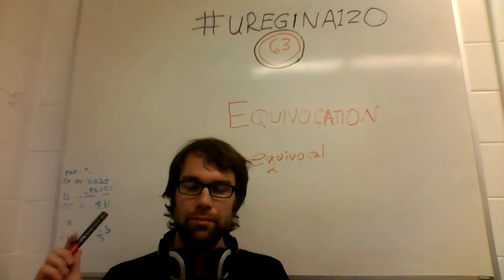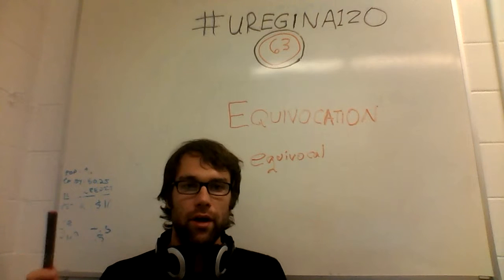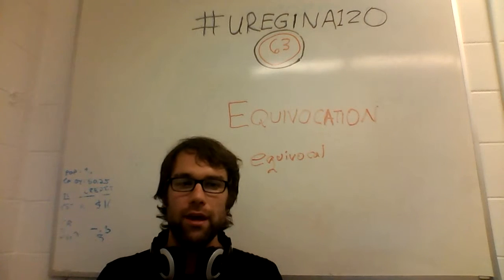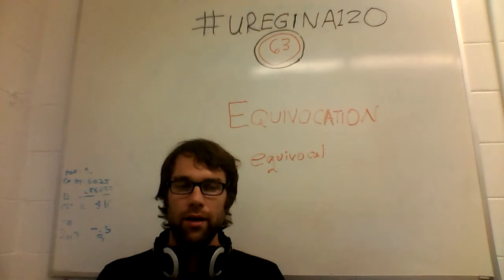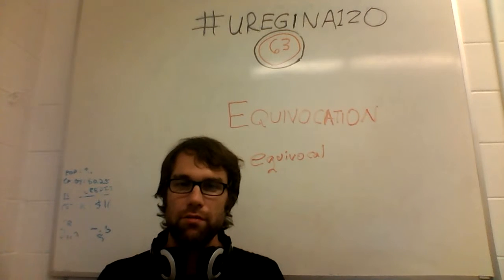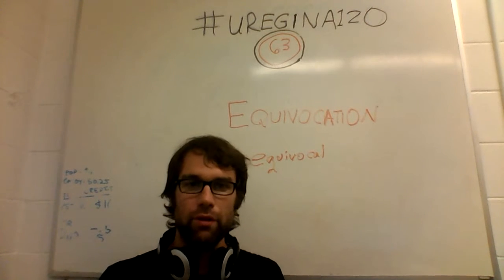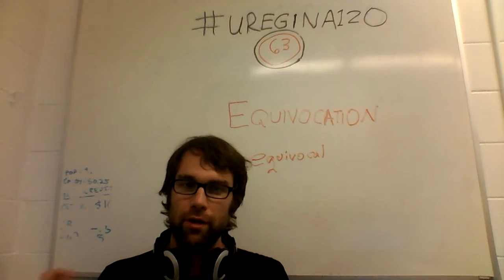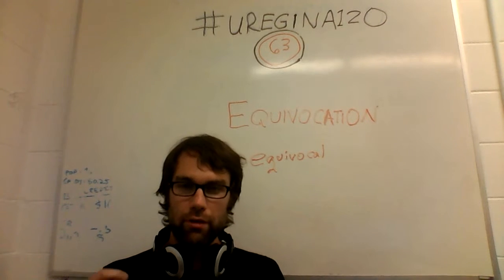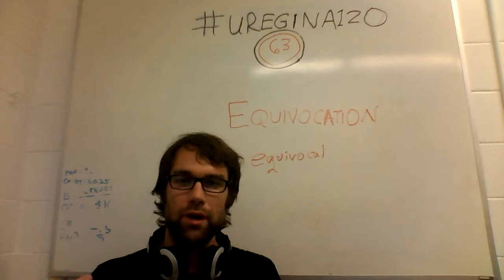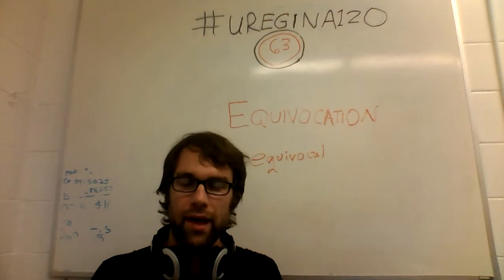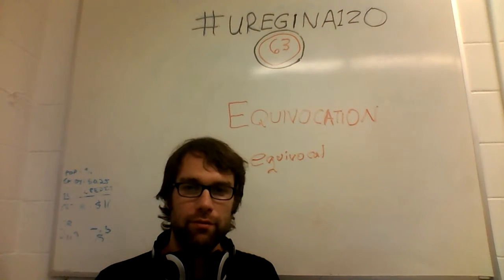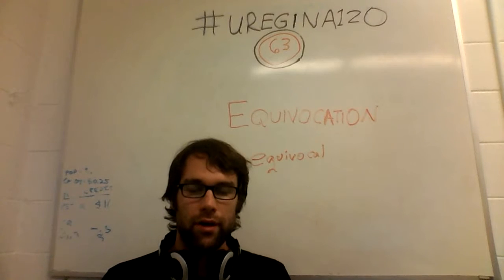It's also related to the argument from emotion, because often when this is involved, one of the meanings has a high salience, or a strong emotional association in your mind, and then the other definition would be the one actually appropriate for the argument itself. If you can trigger those emotions and force your brain to make that association — even at a subconscious level — you can sometimes get away with convincing people of your conclusion, even though it is not valid.